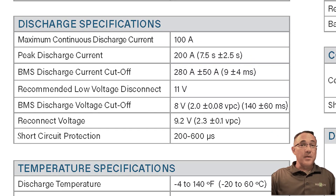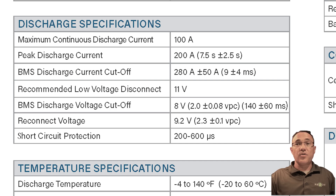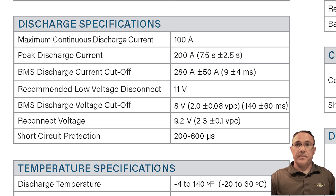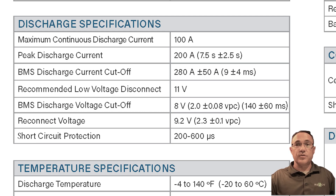Discharge specifications — maximum continuous discharge. The maximum continuous discharge is the maximum current the battery should be discharged at continuously. Running above this current will at least shorten the life of your battery, so it's very important to understand the demands of your application to remain under the maximum continuous rating. Doing so will prevent damage to your battery or loss of power to your application.